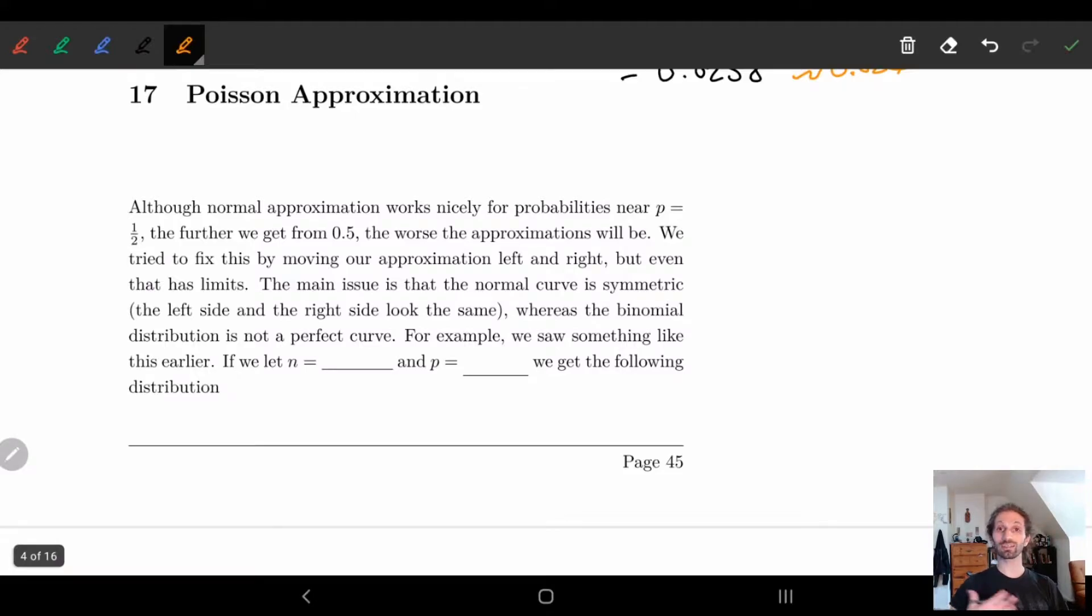Next we're going to look at a different way of doing this called the Poisson approximation which is in a way nicer when we have small p and big N. Again, if p equals one half normal approximation is amazing but the further we get the worse it is.